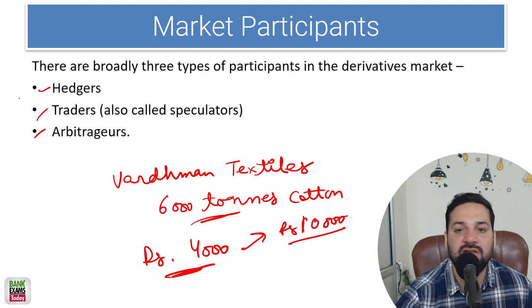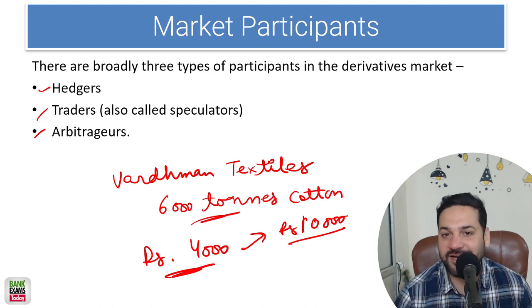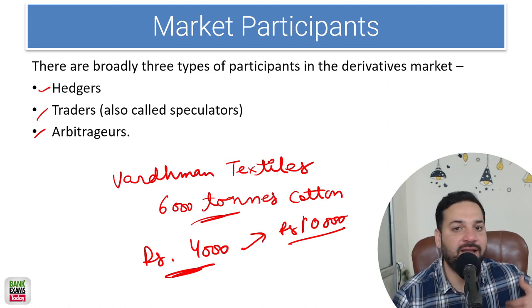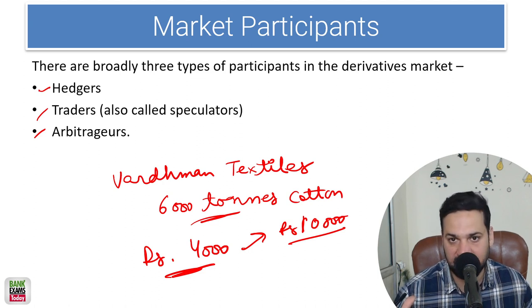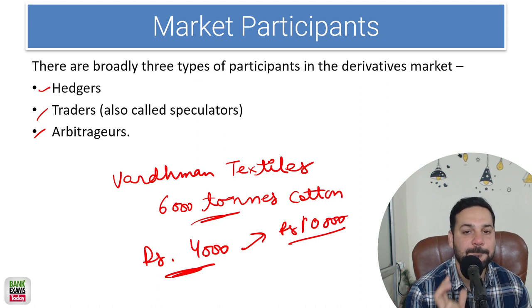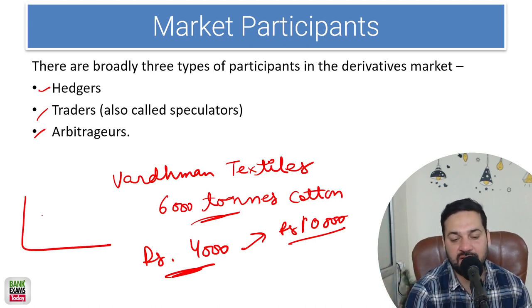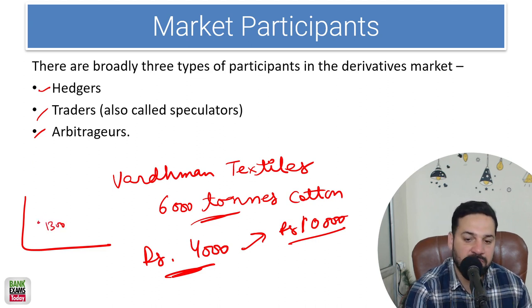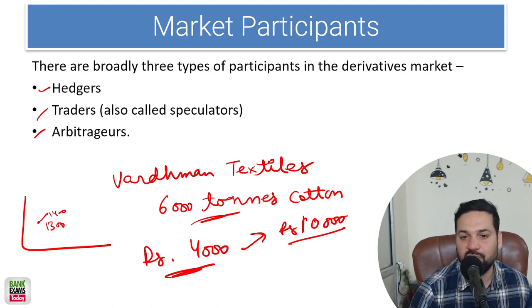Traders are generally speculators. There are a lot of traders who just buy and sell securities for the sake of profits — ninety percent of them are in losses — but their goal is to make money from price variations, such as trading HDFC Bank shares for a hundred rupees profit.